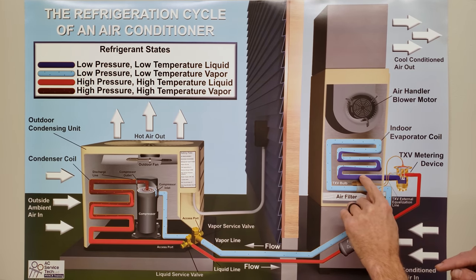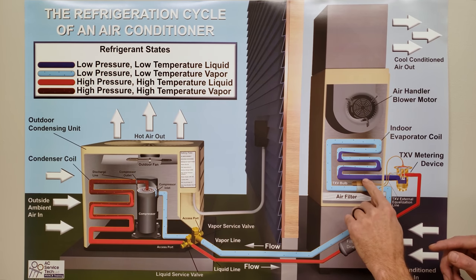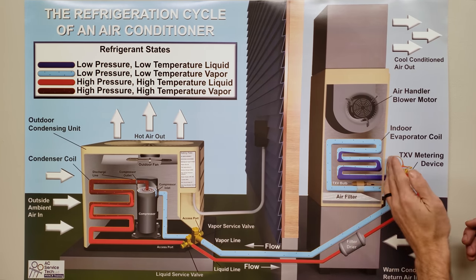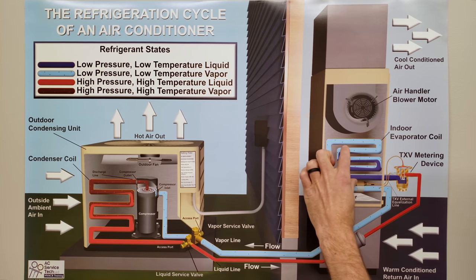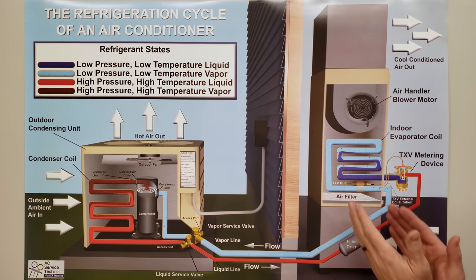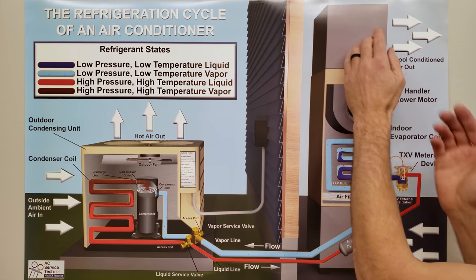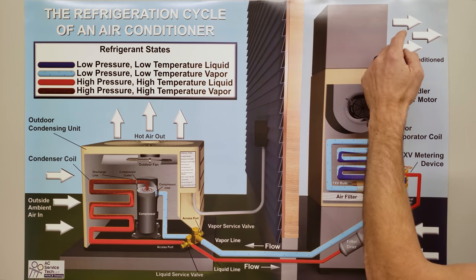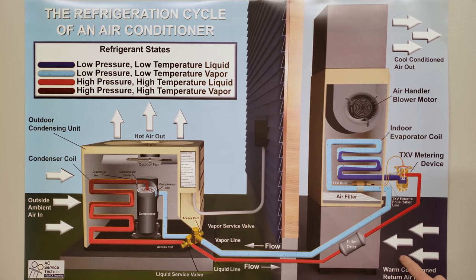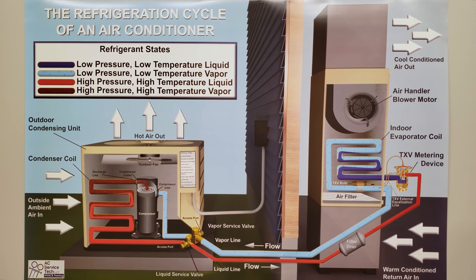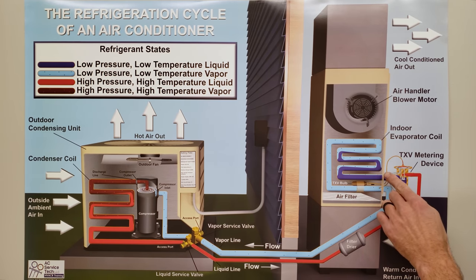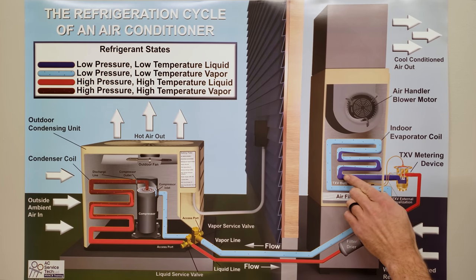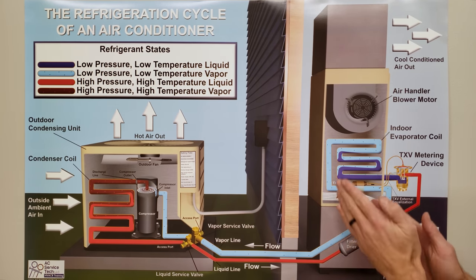Once the refrigerant is low in pressure, it expands into a liquid-and-vapor mix — about 20% vapor and 80% liquid. As it travels through the evaporator coil with air crossing the coil, the refrigerant absorbs heat from the air, lowering the air temperature. The air may enter at 70°F dry bulb and exit at around 50°F, while the refrigerant entering the evaporator coil may be around 40°F.